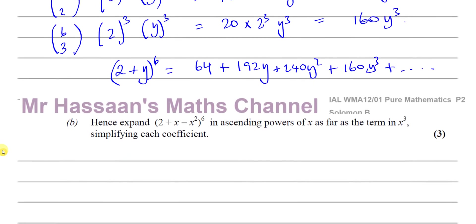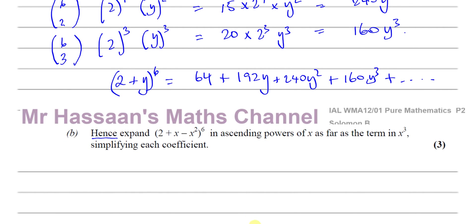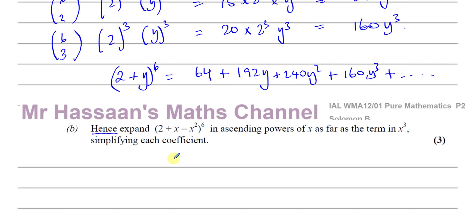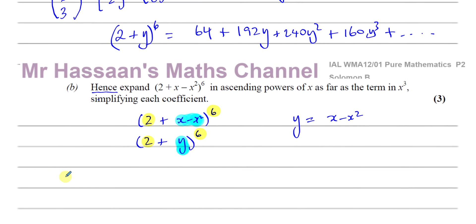For part B, it says 'hence expand (2 + x − x²)^6.' Whenever you see the word 'hence,' there's going to be a connection with the question before it. We have (2 + y)^6 from part A, and here we have (2 + x − x²)^6. We can see these are almost the same — both have the 2 and the power of 6 — so we can use the part A pattern to expand this. Let's call y = x − x².